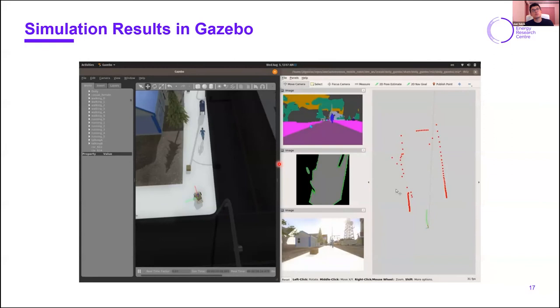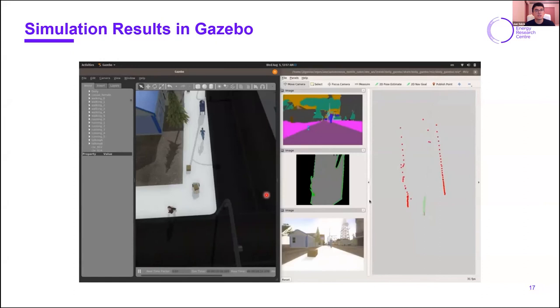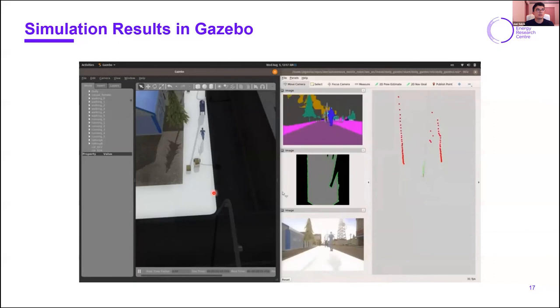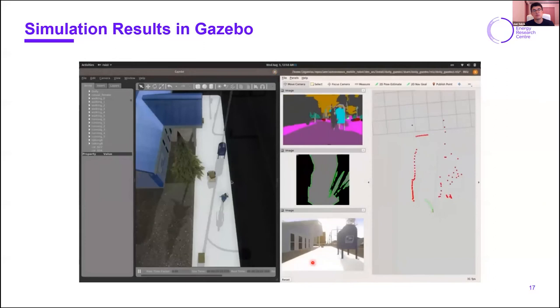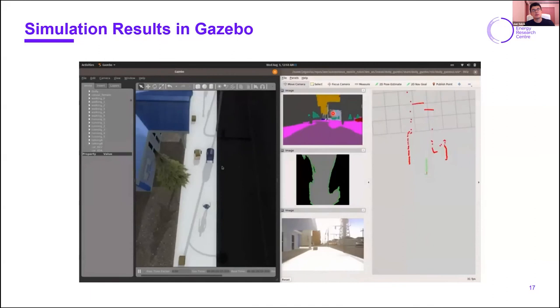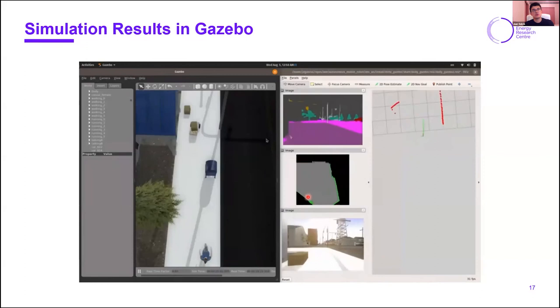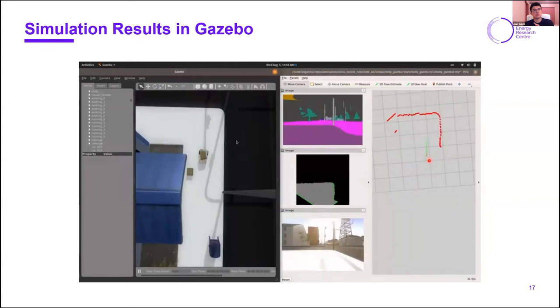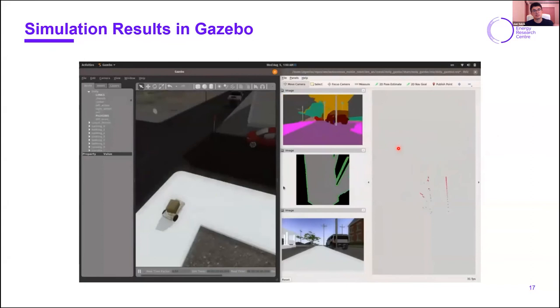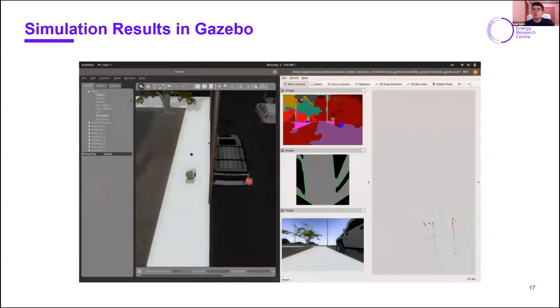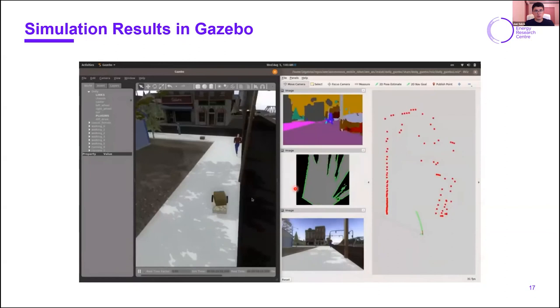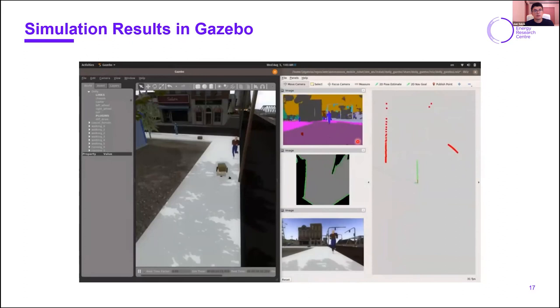Here we can see some simulations performed in Gazebo using this approach. On the left side we can see the robot simulated in an urban environment. We can see on the right side how we capture the image from a front-facing camera, we perform semantic segmentation, and then we do the perspective transformation. We estimate the contours of the drivable area, we discretize these points, and then we use these points to perform planning and define the velocities that the robot must follow in order to drive safely on the sidewalk. Basically here what the robot is doing is going around the block. We define four points on each corner of the block and it drives using this approach on the sidewalk in a simulated urban environment.